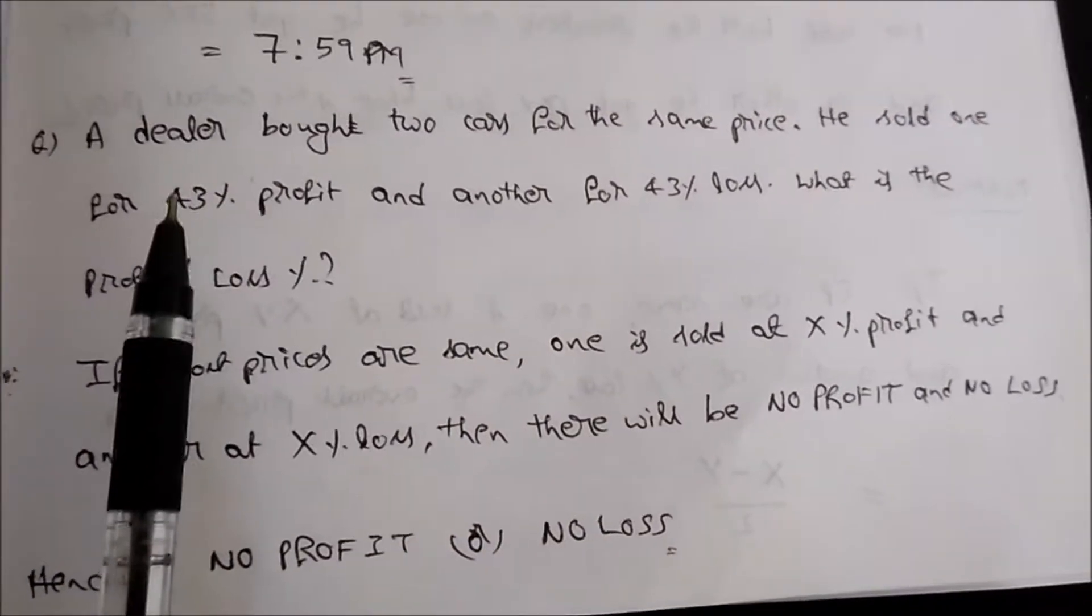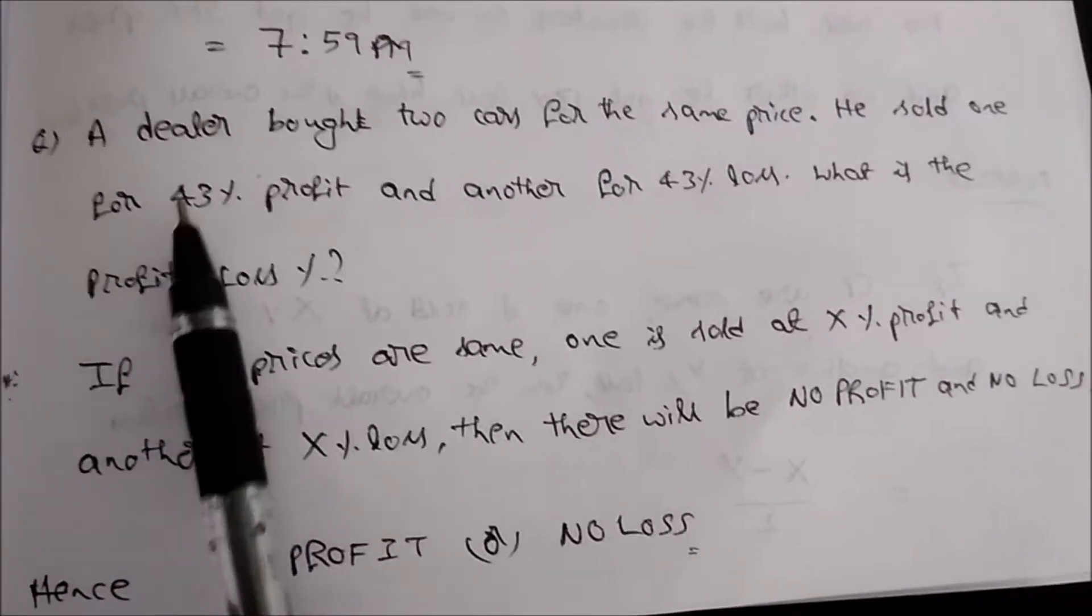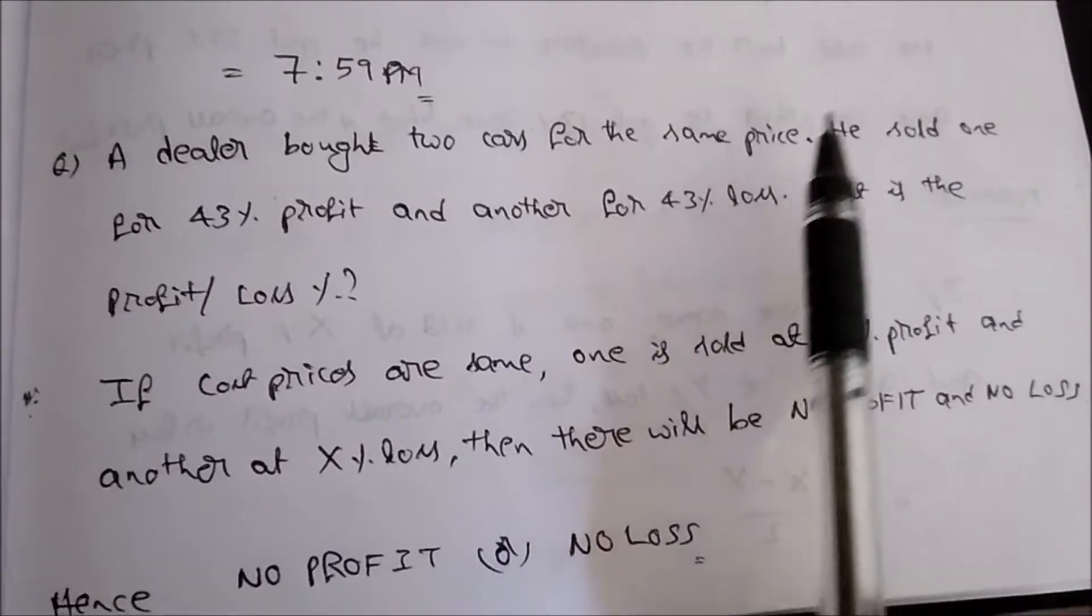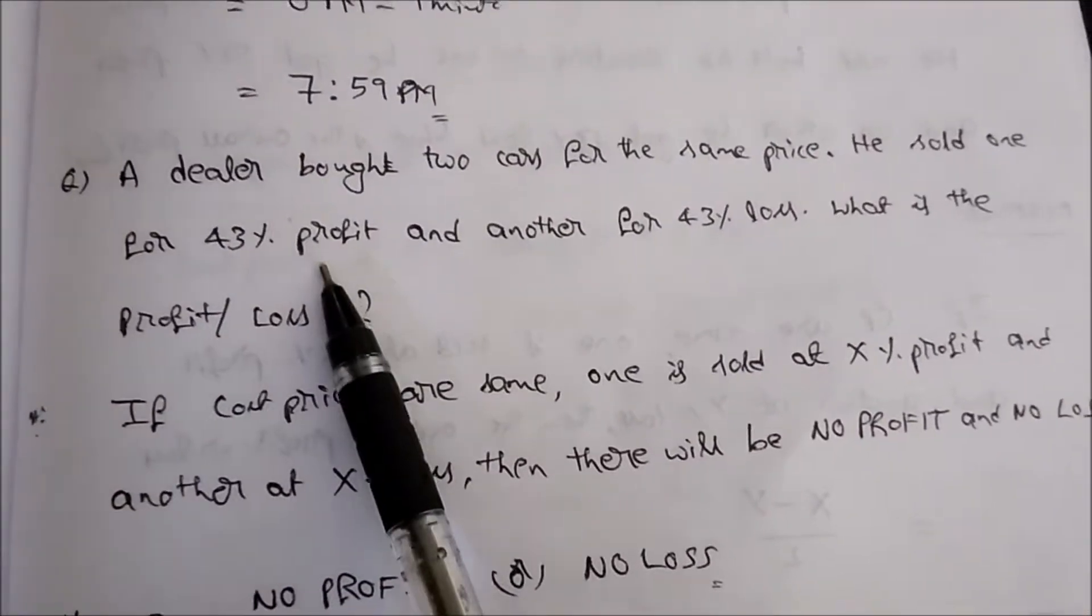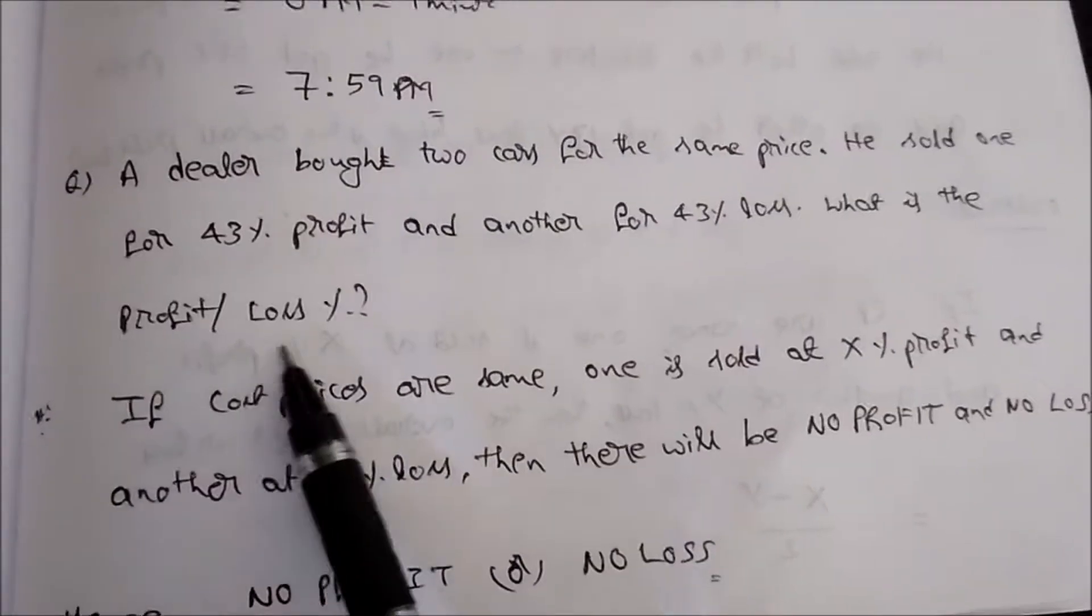Hi friends, today I have taken a problem from the topic profit and loss. The question is: a dealer bought two cars for the same price. He sold one for 43% profit and another for 43% loss. What is the profit or loss percent?